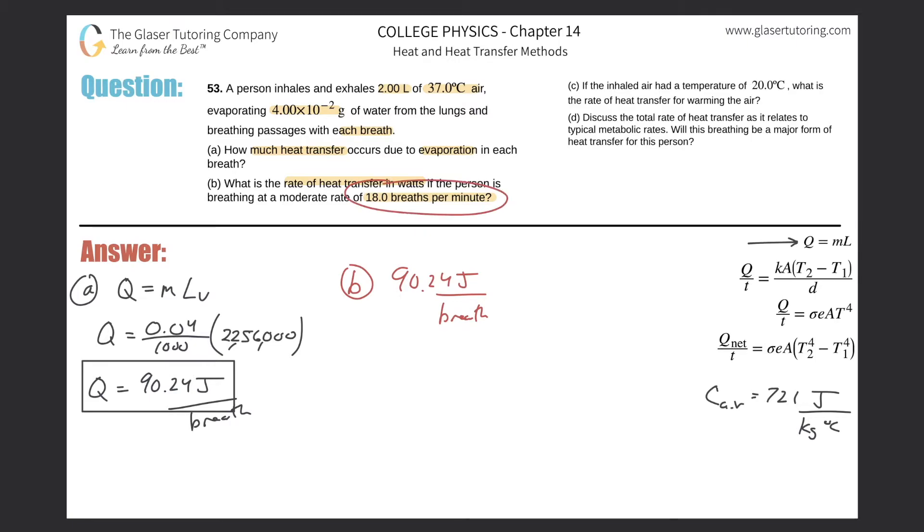So we have 90.24 joules per breath. And we know that there's 18 breaths per minute. What I can do is multiply that. I want to get rid of breaths, so breaths here will go on the top. And then it tells us a rate of breathing, 18 breaths per minute. So this is really breaths per minute, 18 breaths per single minute. Notice, the breaths cancel. What units are you left with? Well, you're left with joules per minute. And you want watts. So what's a watt? That's a joule per second.